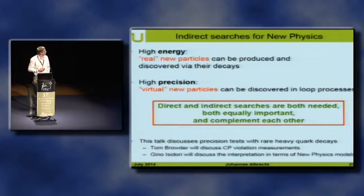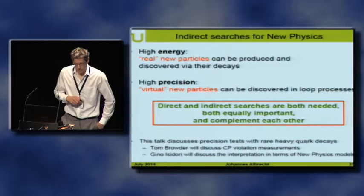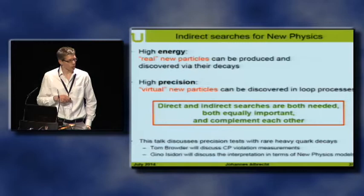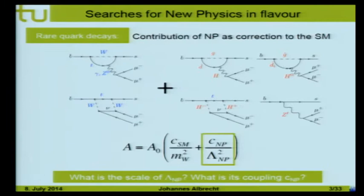Both of these approaches are very important, orthogonal, and complement each other. In my talk, I will discuss rare heavy quark decays, where I interpret heavy quark decays mostly as beauty decays. Tom Browder will discuss CP violation measurements. I will give a brief introduction to the experiments, and Tom will give a brief outlook of the next generation of experiments. After us, Gino will discuss the interpretation of these measurements in terms of new physics models.